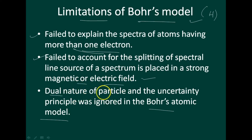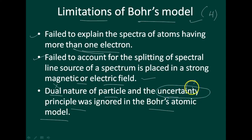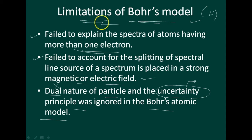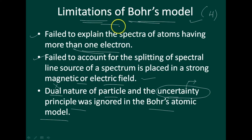Third limitation: the dual nature of particles and the uncertainty principle were ignored in Bohr's atomic model. Electromagnetic radiation exhibits both particle-like and wave-like properties — the dual nature — which Bohr's model cannot explain. It also ignores the uncertainty principle, which will be explained later. These are the limitations of Bohr's model. Please concentrate on the postulates, limitations, the line spectrum of hydrogen, the series — Lyman, Paschen, Balmer — and the formula-based problems for the examination.